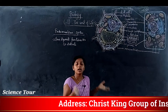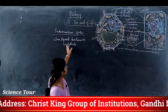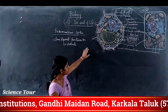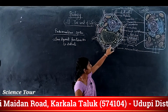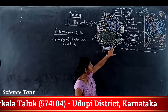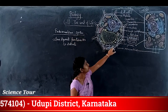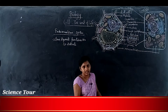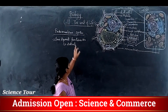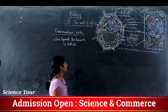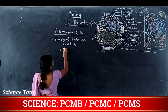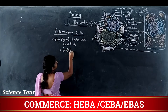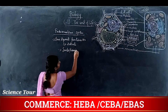The endomembrane system — 'endo' means inside, 'membrane' refers to membrane-bound organelles. So the organelles present inside the cells that are grouped together form the endomembrane system. The endomembrane system includes the endoplasmic reticulum.